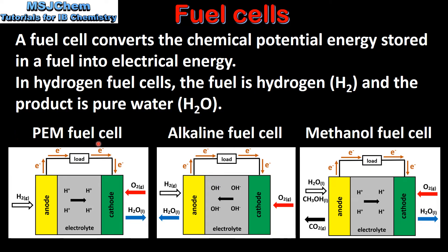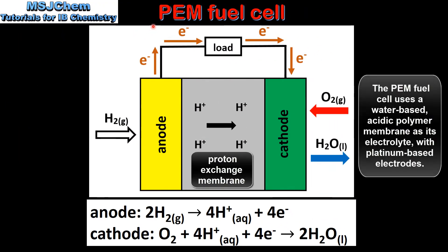a PEM fuel cell, an alkaline fuel cell, and a methanol fuel cell. We'll start by looking at a PEM fuel cell, which stands for proton exchange membrane. In a PEM fuel cell hydrogen gas is oxidized at the anode, as we can see in this equation here. When the hydrogen gas is oxidized the electrons pass through an external circuit from the anode to the cathode. The hydrogen ions pass from the anode to the cathode in the proton exchange membrane. At the cathode we have the reduction of oxygen to produce water, as we can see in this equation here.